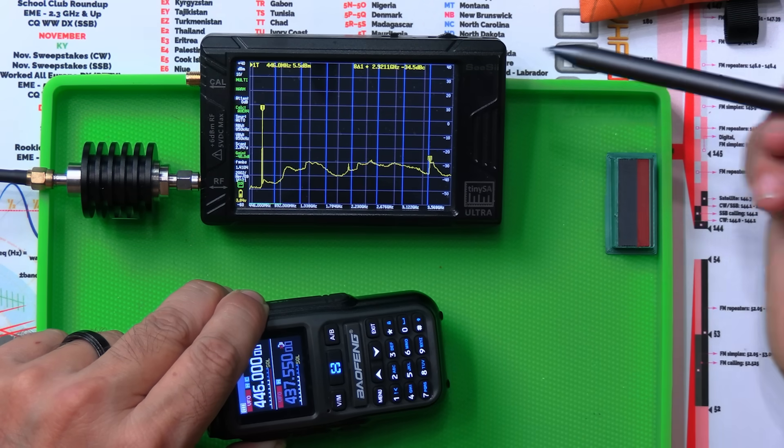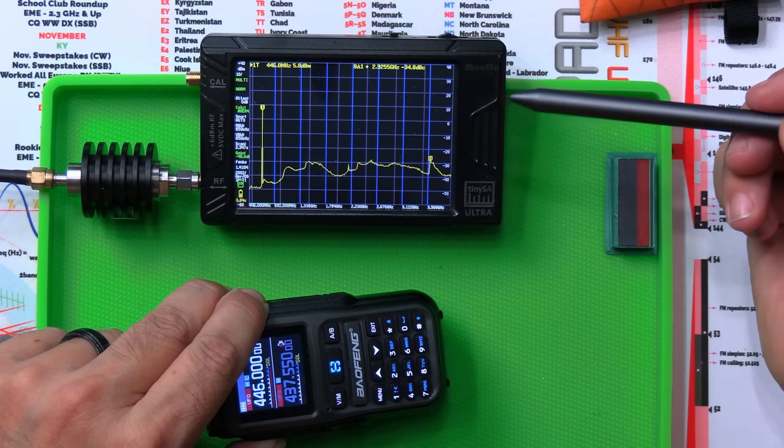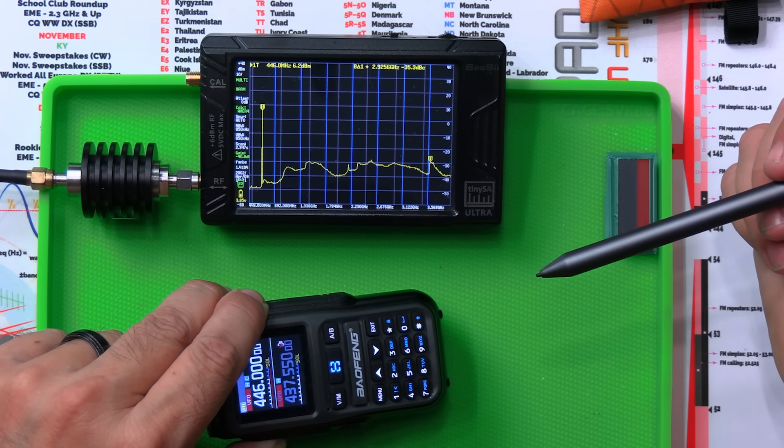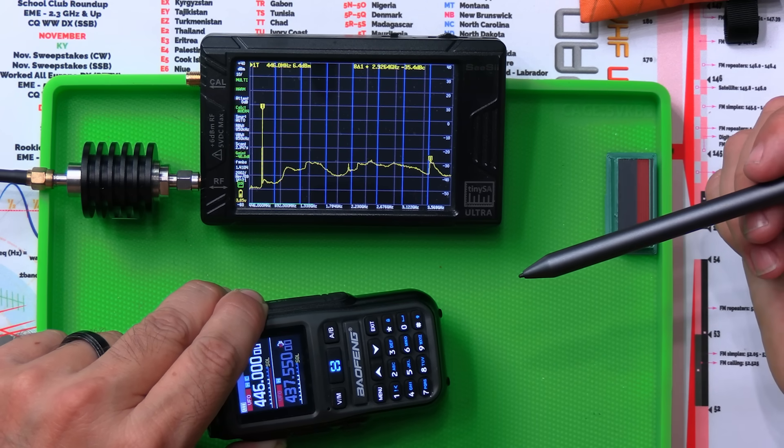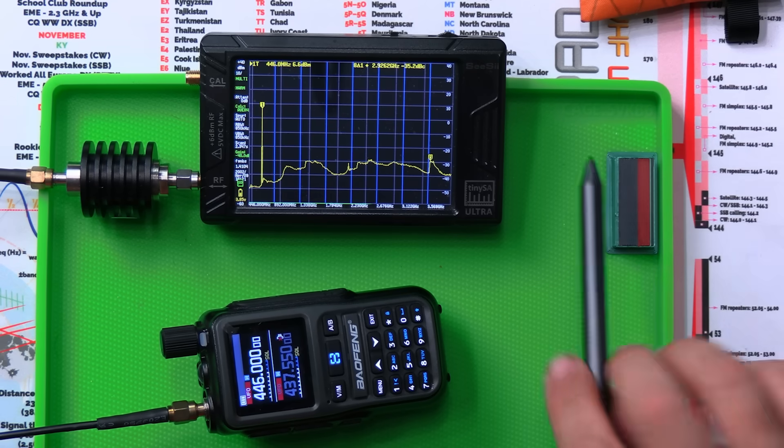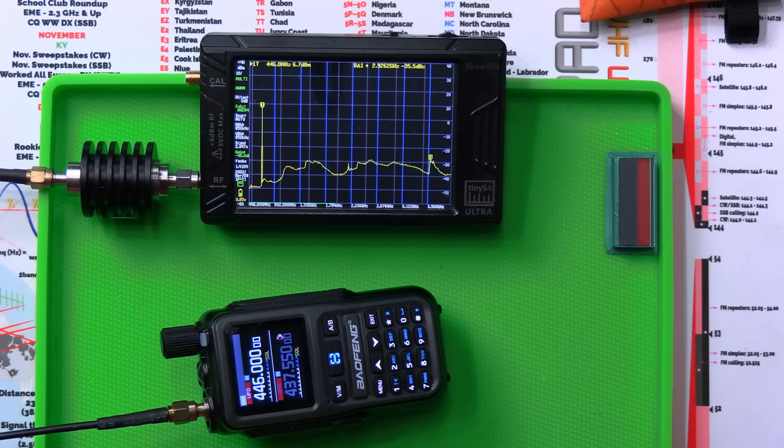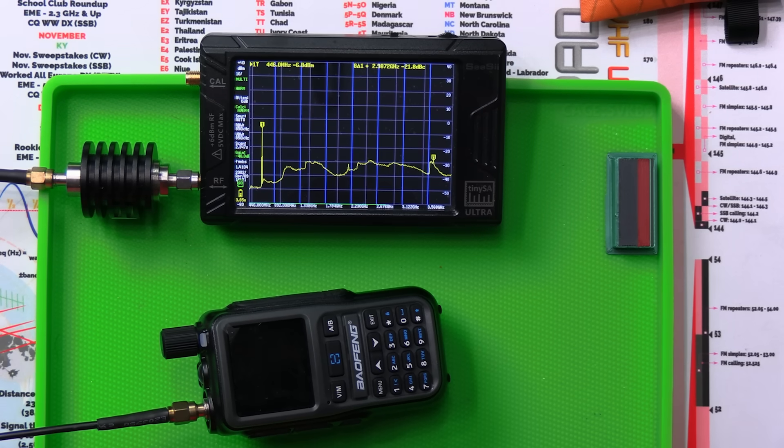That's a little bit... Got a little bit of harmonic up here, but all this down here looks really good. First harmonic plus 10. That means it's probably transmitting a little bit higher power on 440... On the 440 band than it is the 2 meter band. That's okay. That's good. For a Baofeng radio, that's really, really good. So far, I'm impressed. I'm impressed with that.